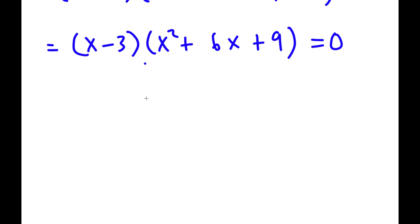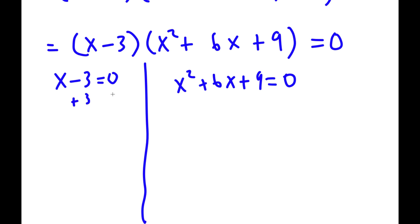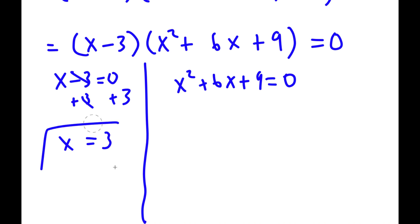Now, this is going to give me two equations. I have x minus 3 is equal to 0, and I also have x squared plus 6x plus 9 is equal to 0. For x minus 3 equals 0, all I have to do is add 3 on both sides, and I get x is equal to 3. So this is a simple equation.